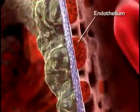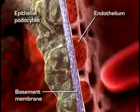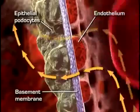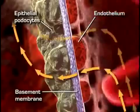The kidneys also regulate pH and eliminate products of metabolism such as urea, uric acid, and creatinine.